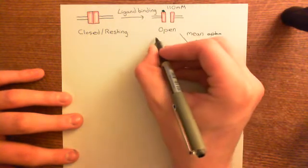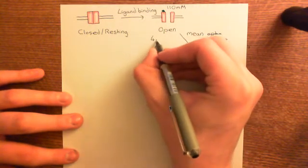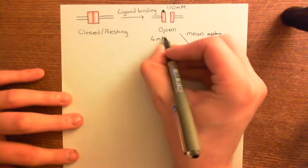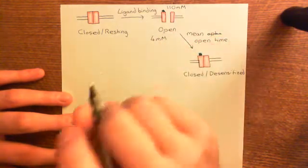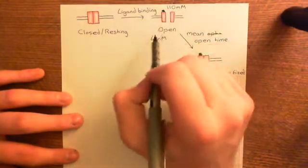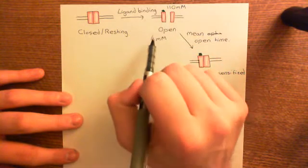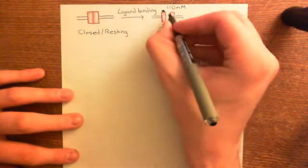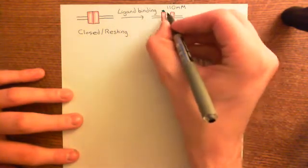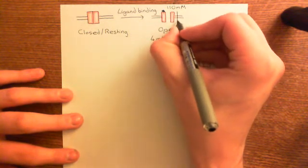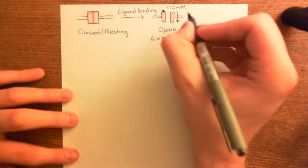The intracellular concentration of chloride anions is around 4 mmolar, whereas the extracellular concentration is approximately 110 mmolar. That gives roughly a 30-fold gradient favouring the movement of chloride inward, so the concentration gradient drives chloride in.